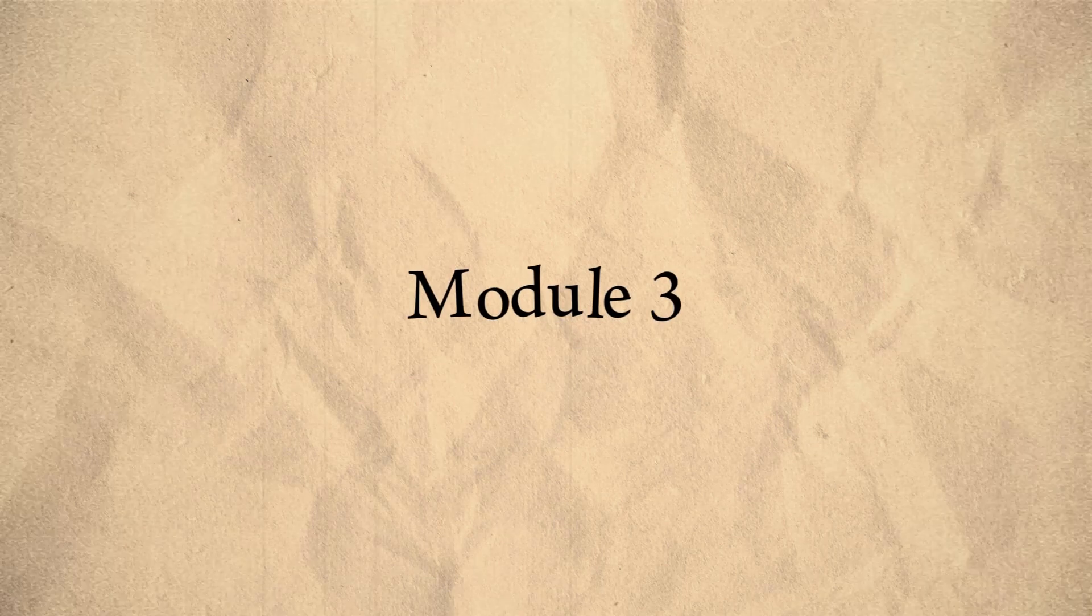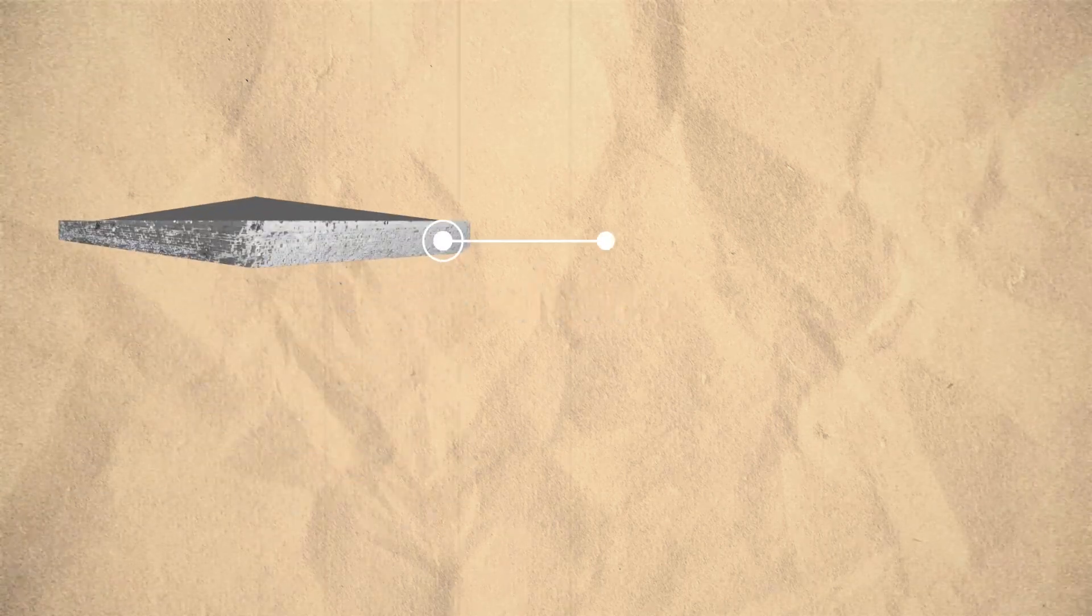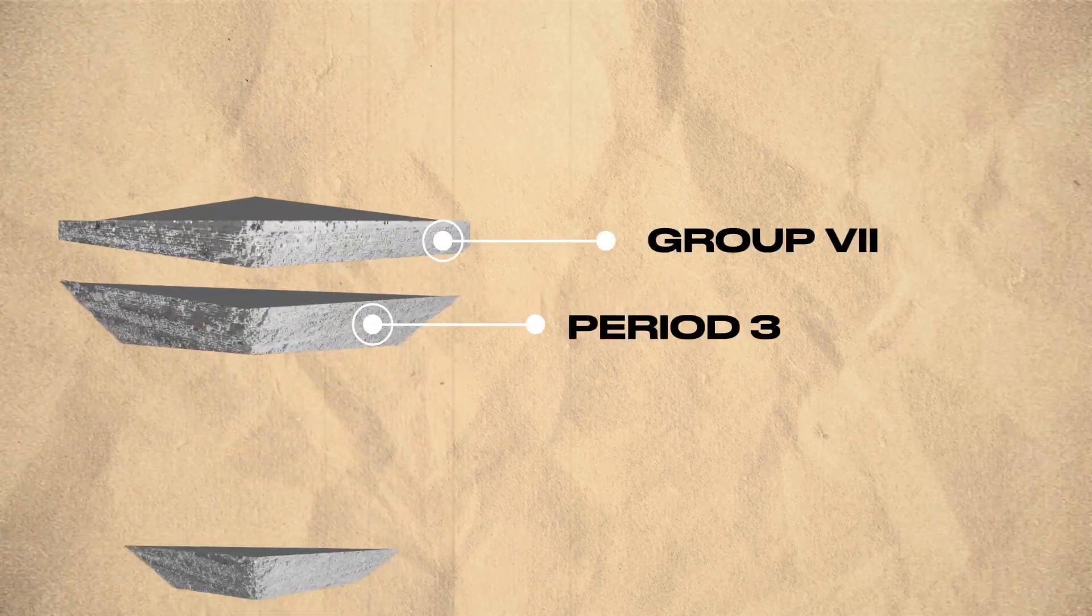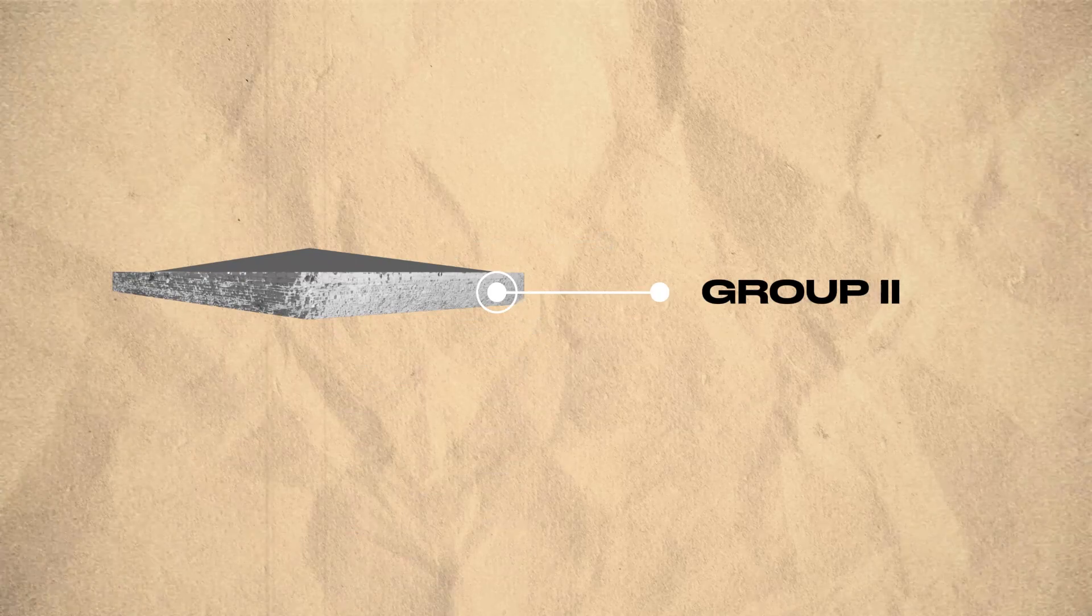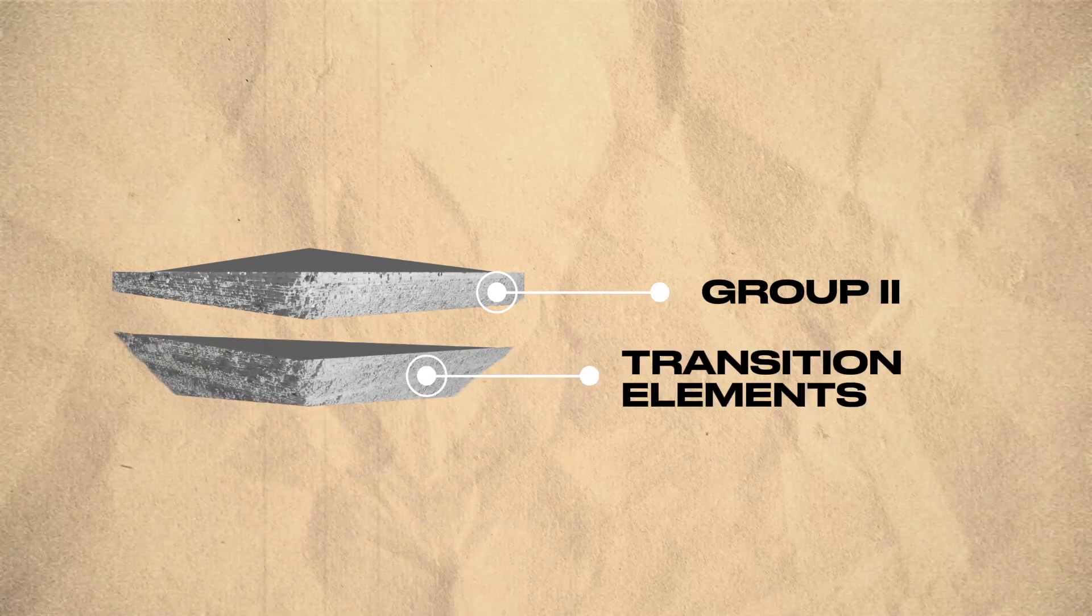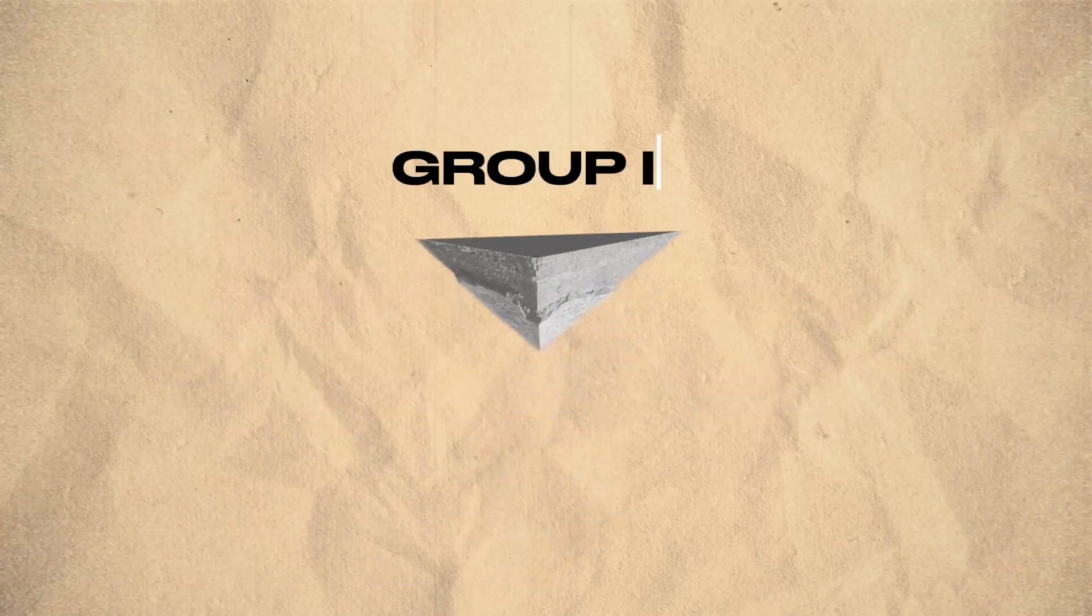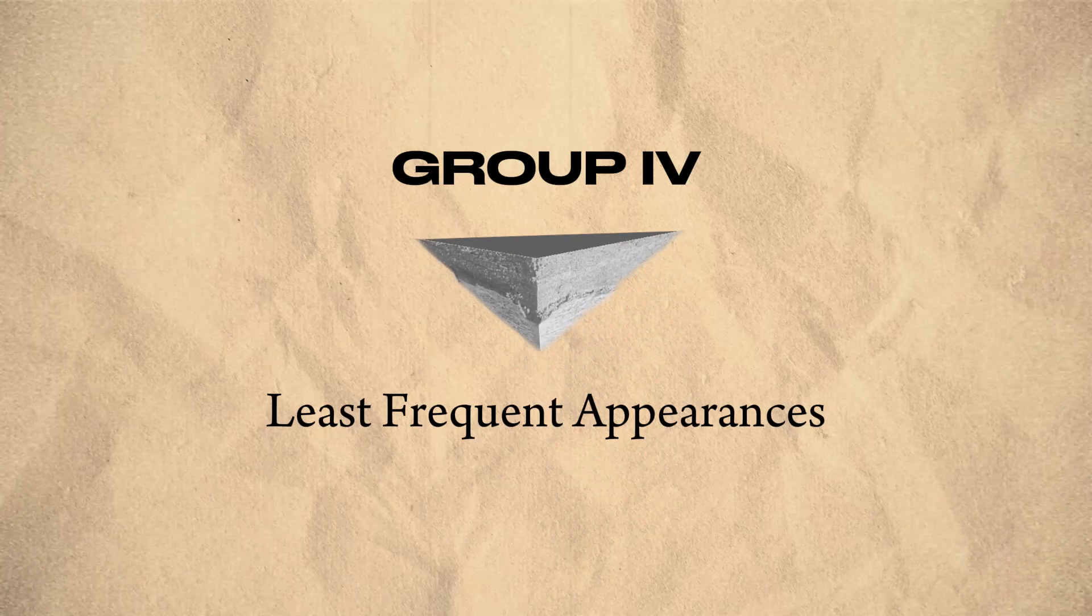In the third module, group 7, period 3, and identification of cations and anions steal the spotlight with frequent appearances, while group 2 and transition elements take the middle ground. Group 4, however, is a quiet player making the least frequent appearances.